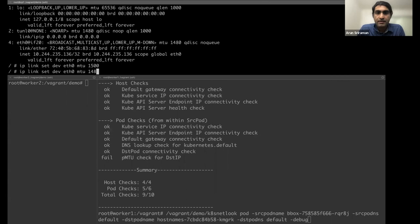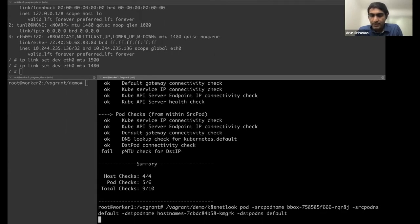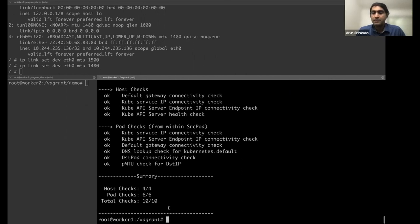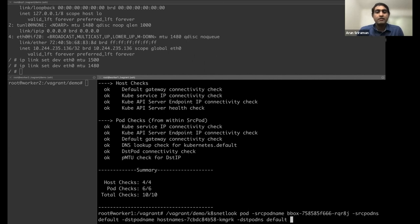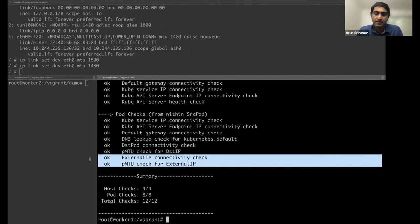Now let's fix this again and fix it to 1480. And then run this again. The MTU for destination is 1480 and everything looks good. We can do the same thing for external IP as well. So let me say external IP. Let's try 1.1.1.1.